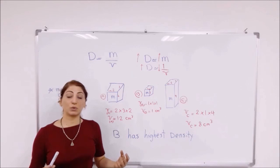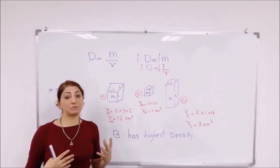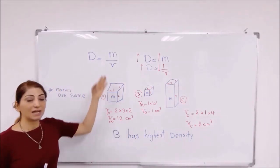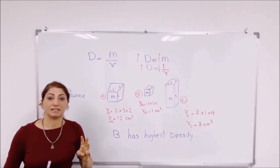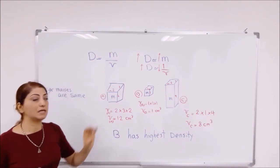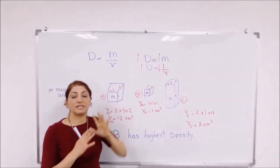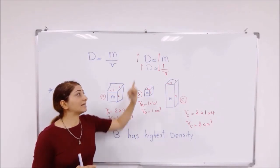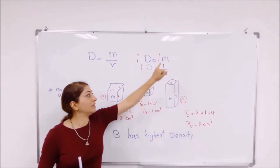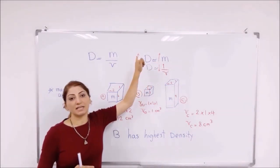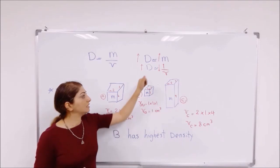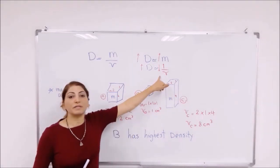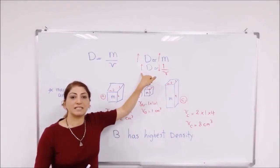Now let's see the relationships between density, mass, and volume. Density is directly related to mass — if you increase the mass, the density will increase. Density and volume are inversely related — if the volume of the object decreases, the density increases.